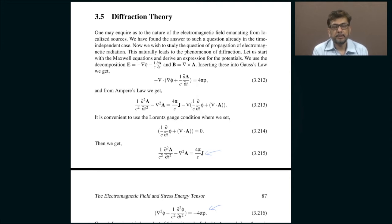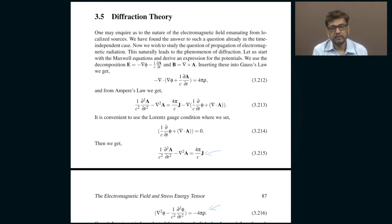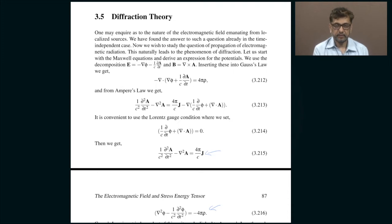In most optics textbooks, they describe very phenomenologically motivated approaches such as Fermat's principle and other seemingly ad hoc approaches first, and a proper description of electromagnetic theory — the proper description of interference and diffraction in terms of electromagnetic waves — is presented towards the end if at all. My approach is the reverse: I am going to tell you the correct final answer, which is the derivation of the theory of diffraction and interference using electromagnetic theory, simply by solving the wave equation with appropriate boundary conditions.